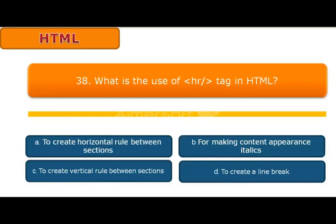Question 38: What is the use of HR slash tag in HTML? A to create horizontal rule between sections, B for making content appear in italic, C to create vertical rules between sections, D to create a line break. Answer is to create horizontal rules between sections.